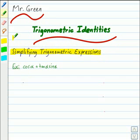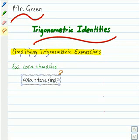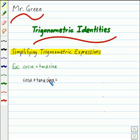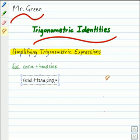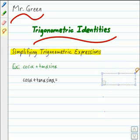These are very useful when simplifying trigonometric expressions. For example, suppose we want to simplify cosine of alpha plus tangent of alpha sine of alpha. There are three trigonometric identities we're going to use to help us simplify this expression. The first one is called a reciprocal identity.